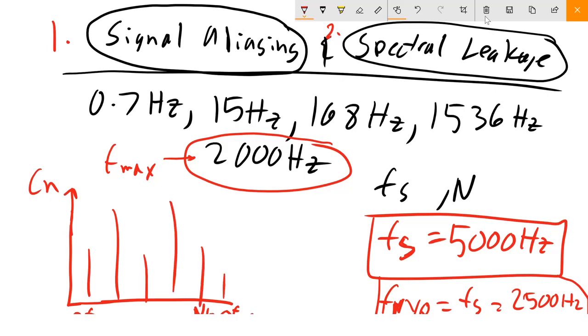If I want to avoid spectral leakage, I want to measure all these different frequencies. I want to have a delta F, I need to pick my delta F so that if I multiply it by any integer, because we're multiplying this by each harmonic coefficient, I need to make sure I have delta F times an integer value that gives me each of these values here.